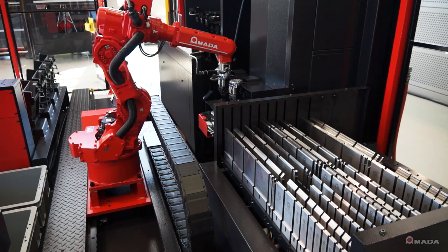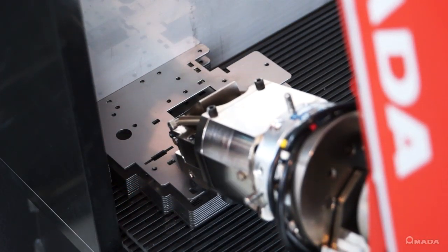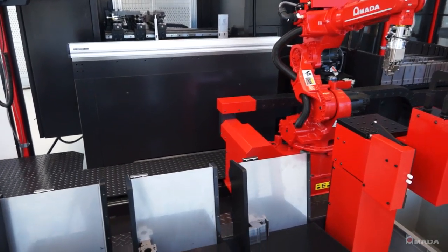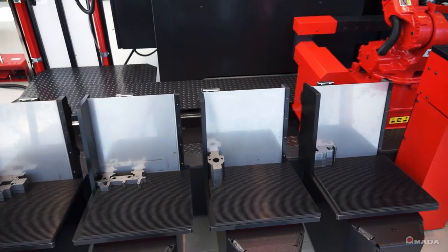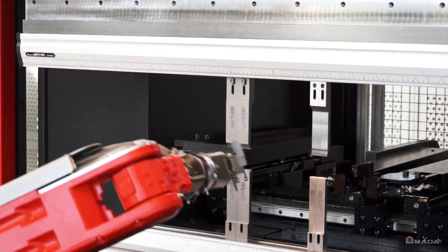Once tools are loaded, the robot selects one of two grippers to retrieve a part blank and begin bending. The EGAR features four loading stations which can be set up with the system's scheduler to facilitate high-mix, low-volume production.